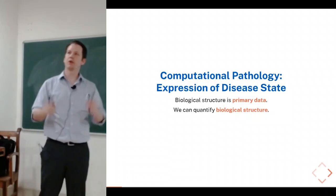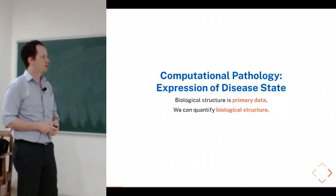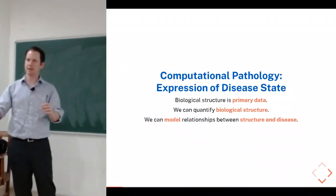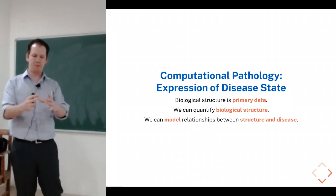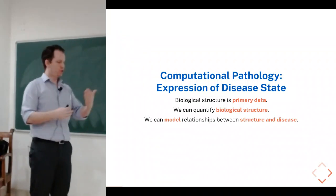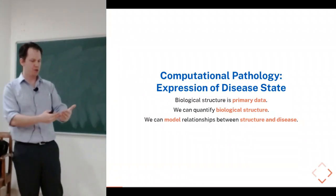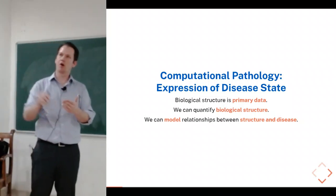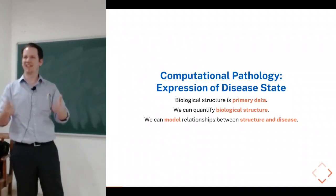We can quantify biological structure — measure all the properties typically used to understand the type of tumor — and use that to build a model. We can model the relationships between structure and disease. Intuitively, if a tumor is tissue growing out of control, you expect more cells. When you see too many cells in the wrong configuration, you say the patient has a tumor, and it's aggressive or not. With machine learning, you can actually measure all those quantities and use them to understand disease better.